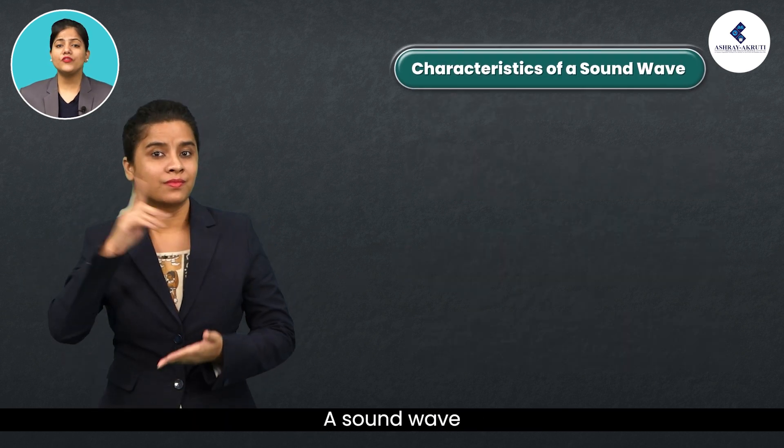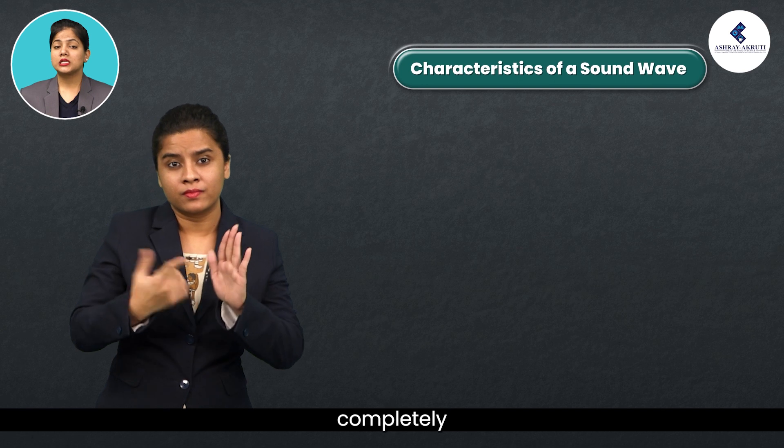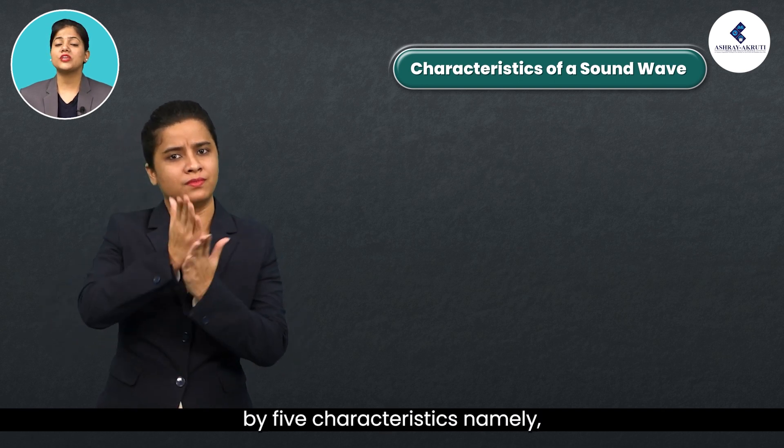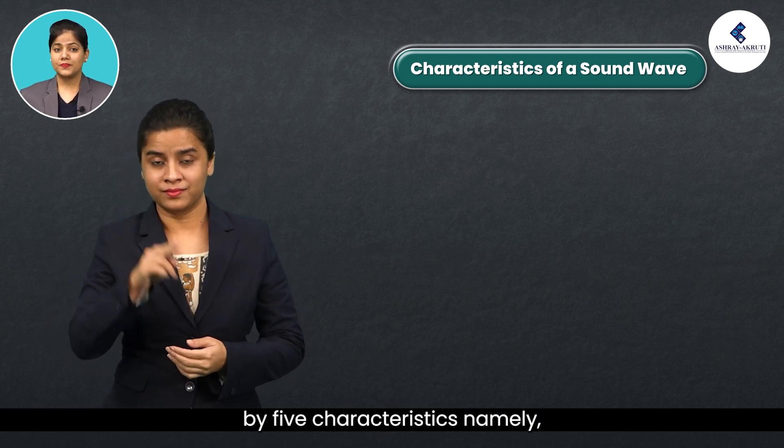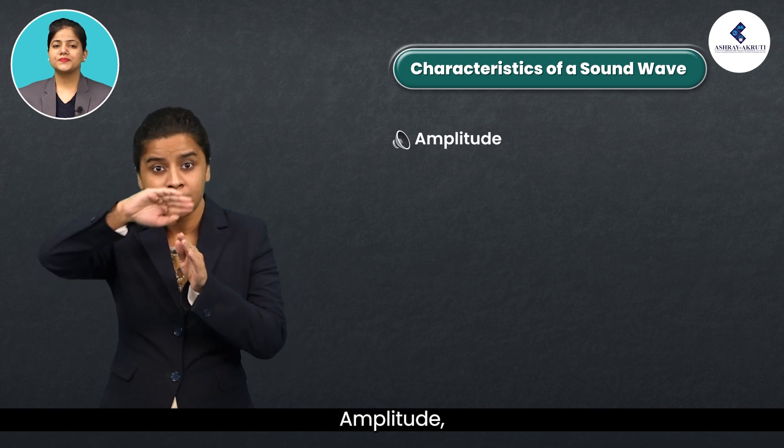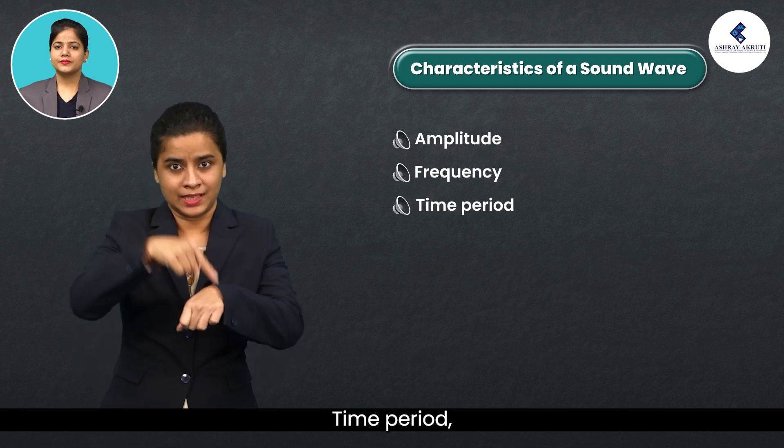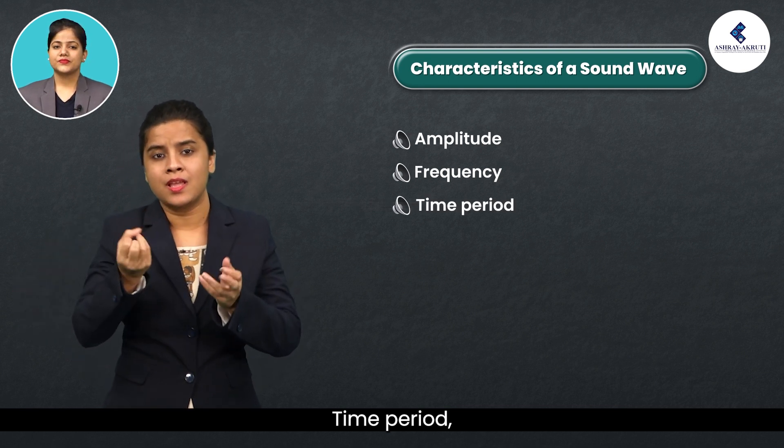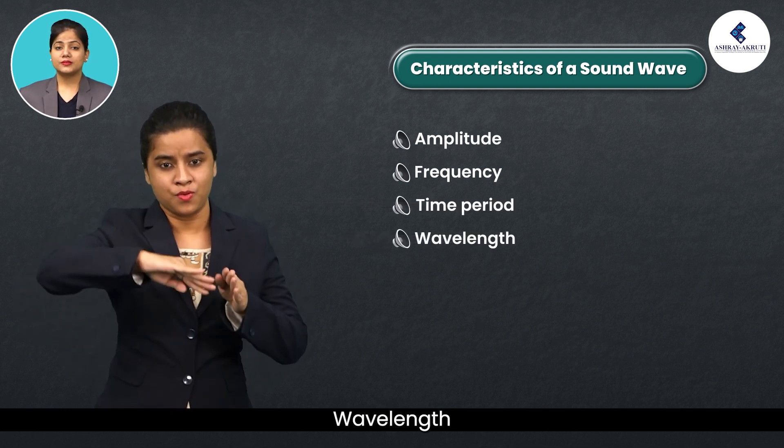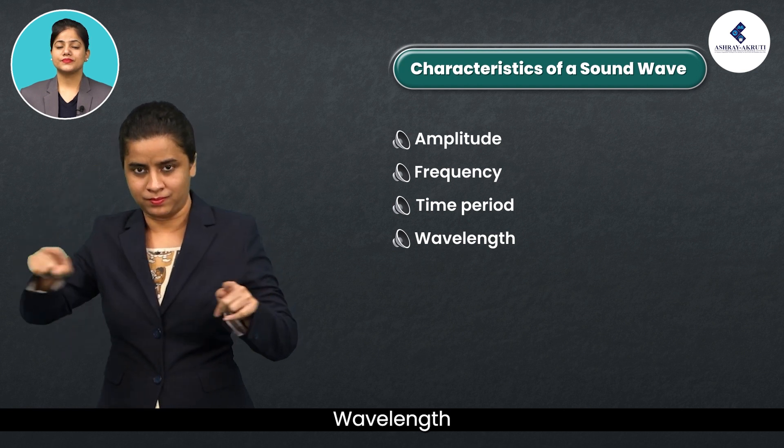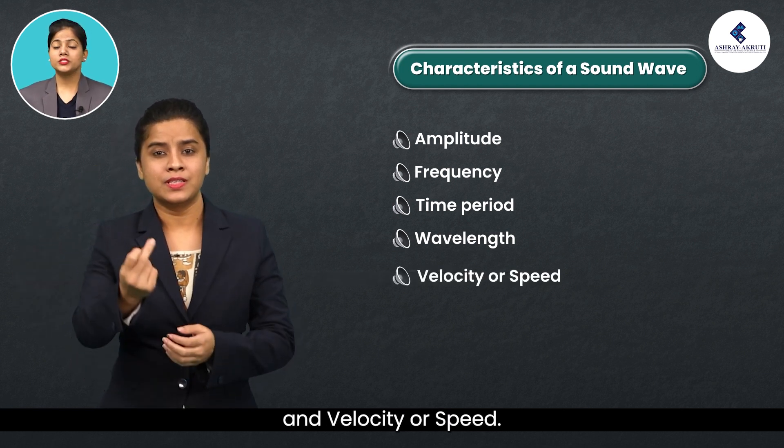A sound wave can be described completely by five characteristics, namely amplitude, frequency, time period, wavelength, and velocity or speed.